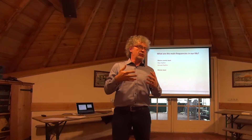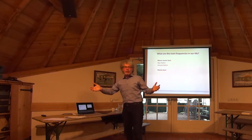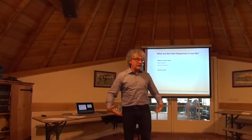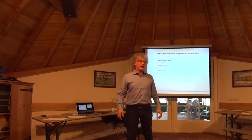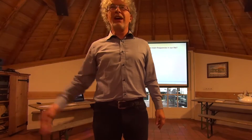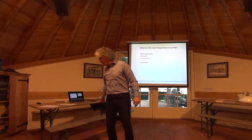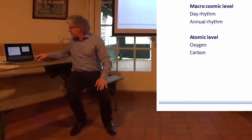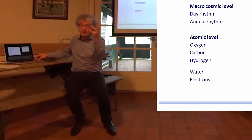Some people are disturbed by the moon rhythm. On the atomic level, what is most present in our body, in plants, or in animals? Carbon, hydrogen, oxygen — and of course water, which is a combination of oxygen and hydrogen.